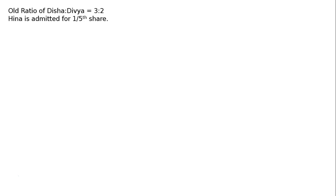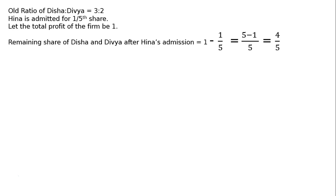Hina is admitted for one-fifth share. Old ratio of Disha to Dibya is 3 to 2. Let the total profit of the firm be 1. The remaining share of Disha and Dibya after Hina's admission is 1 minus 1 upon 5, equals 4 upon 5. Disha's new share is 4 upon 5 multiplied by 3 upon 5, that is 12 upon 25.